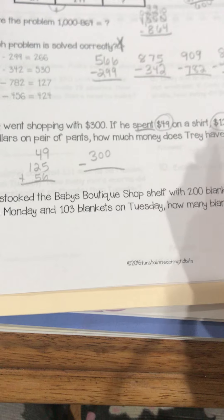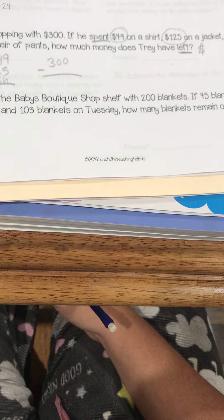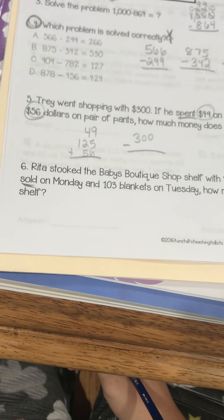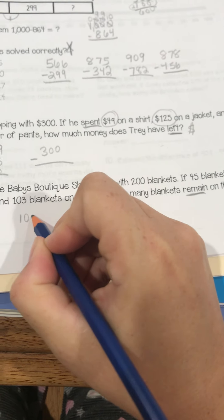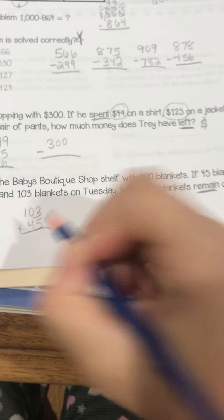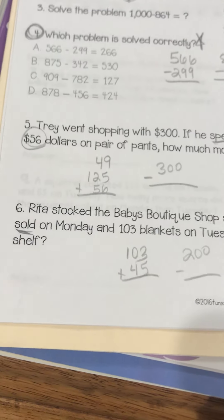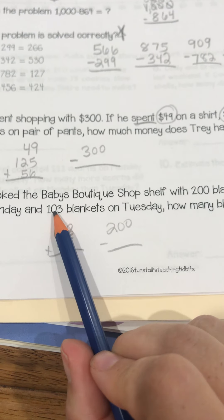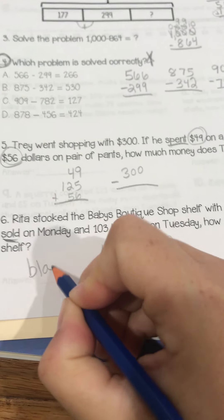Have left, of course, is another clue word. And your answer, well, I just need a dollar sign in front because it's money. And number six, same thing. Rita is making some blankets. She sells. That's a clue word. 45 on Monday, 103 on Tuesday. How many blankets remain? Another clue word for subtraction. Again, me personally, I would put the two amounts that she sold together first. Then I would subtract that from 200. Or you can subtract 45 from 200, and then take that answer and subtract 103 from it. That's up to you. Your label word, of course, is going to be blankets because that's what these are.